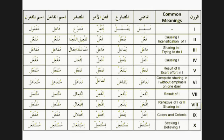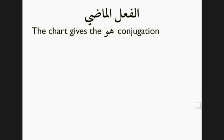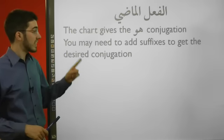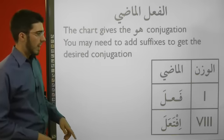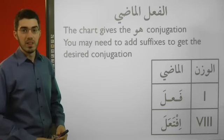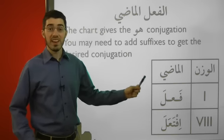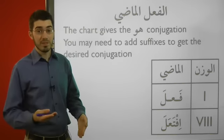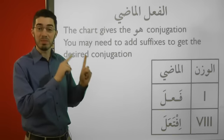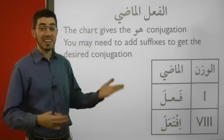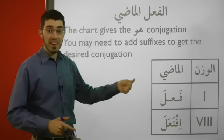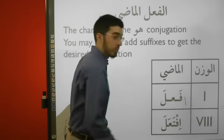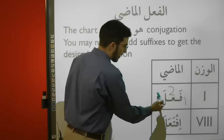A few things to note about the fi'l ma'adi. Number one, our chart is just giving us a conjugation for huwa — you have to extrapolate for the other pronouns, and because of that you might need to add suffixes to get your desired conjugation. Now, it is true we're using the fa, ayn, and lam — which is the verb fa'la meaning to do something. However, this table is not unique to the verb to do something; it works for any verb: to study, to sing, to laugh, etc. Because we're using the fa, the ayn, and the lam as like wild cards. The fa is a shorthand for the first root of your verb, the ayn is a shorthand for the second root of your verb, and the lam is a shorthand for the third root of your verb.